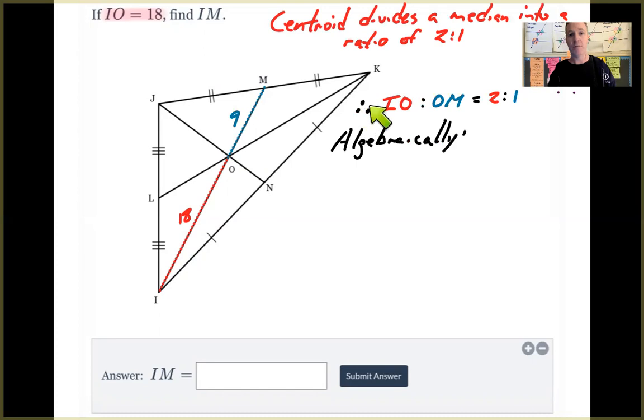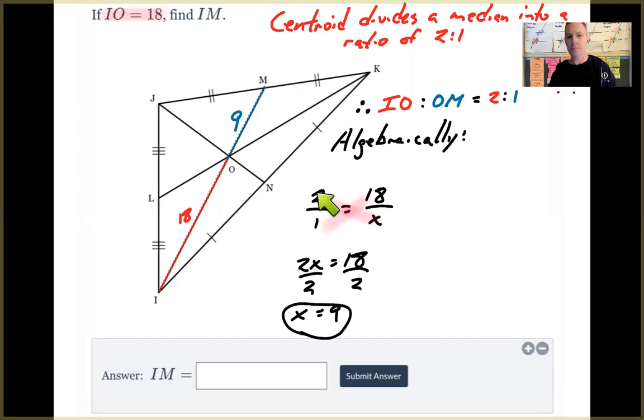So therefore, again, we have those three dots, IO to OM is in a ratio of two to one. And that's how we kind of express these ratios. So if this were 18, this has to be half of that, which is nine, right? Two parts to one part. How does that work algebraically? So I could think about this like making this X, and then I could say, all right, well, two to one equals 18 over some number X, and I'm looking for that number. So I can then cross multiply. If I have two fractions that are equal to each other, I can cross multiply. So two times X equals 18 times one. So 2X equals 18. Divide both sides by two. And what do you end up with? X equals nine.